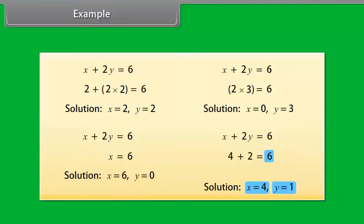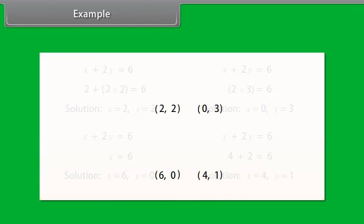So the four solutions we get for the given equation are (2, 2), (0, 3), (6, 0), and (4, 1).